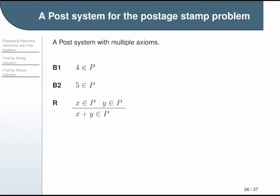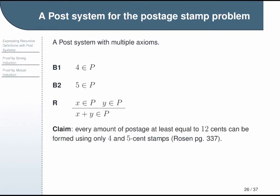If we think of our axioms as telling us we have 4-cent and 5-cent stamps available, and we think of rule R as saying you can combine any number of those stamps together as many times as you like, we could then represent any amount of postage greater than or equal to 12 cents. We can prove it by showing that every positive integer greater than or equal to 12 is in the set P.